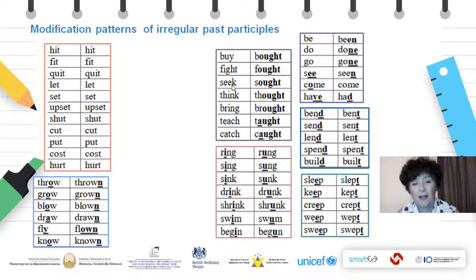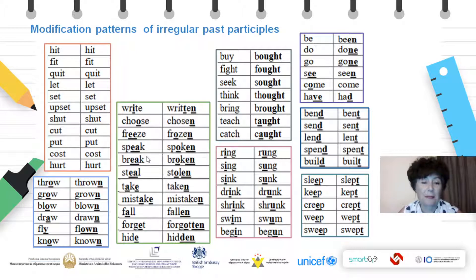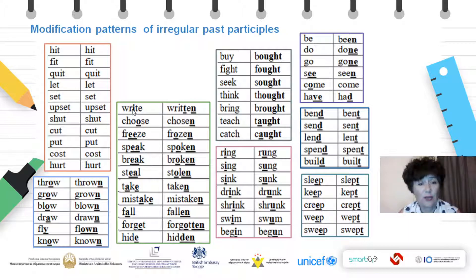We have buy — bought, fight — fought, seek — sought, think — thought, and so on. If somebody wants to make a song of it, go ahead after the end of this class. In this next pattern, the verbs in the base form undergo a change in the middle — the underlined parts — and they also end in -EN. So we have write — written, choose — chosen, freeze — frozen, speak — spoken, break — broken, et cetera. They all end in -EN.